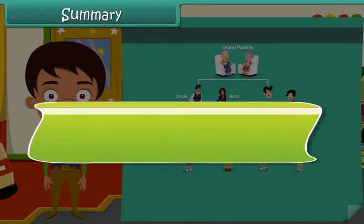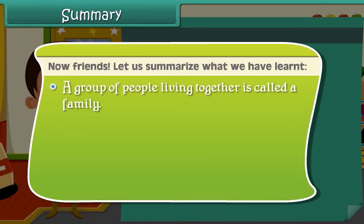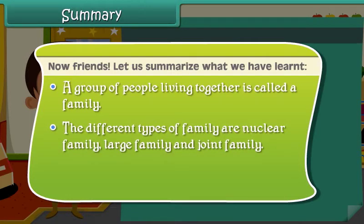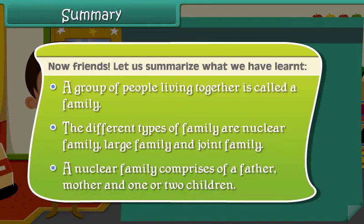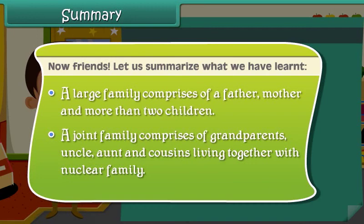Summary. Now friends, let us summarize what we have learned. A group of people living together is called a family. The different types of family are nuclear family, large family and joint family. A nuclear family comprises of a father, mother and one or two children. A large family comprises of a father, mother and more than two children. A joint family comprises of grandparents, uncle, aunt and cousins living together with the nuclear family.